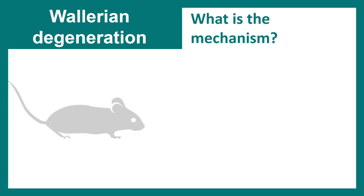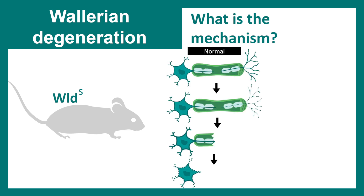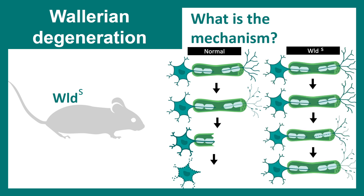An insight came from a mouse mutant known as WLDs, or Wallerian degeneration slow. In normal circumstances, after the injury, the distal site of the injury site will eventually disintegrate, and the entire neuron would die within days. But in the Wallerian degeneration slow mutant, the entire process of degeneration is much slower. Scientists wondered what really happens in this mouse mutant that makes degeneration slow, because if they understand what makes the process slower, they can devise therapeutic targets or drugs to slow down this kind of injury process.